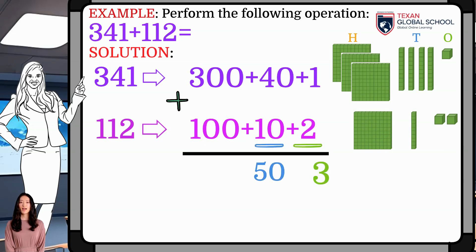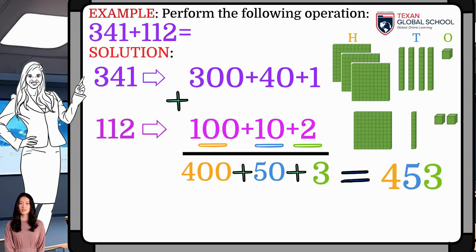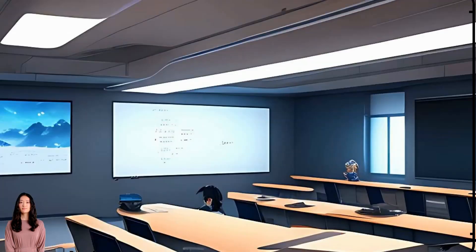Now, add each column: 1s, 10s, and 100s. 1 plus 2 is 3, 40 plus 10 is 50, and 300 plus 100 is 400. Adding directly 400 plus 50 plus 3, thus obtaining 453.